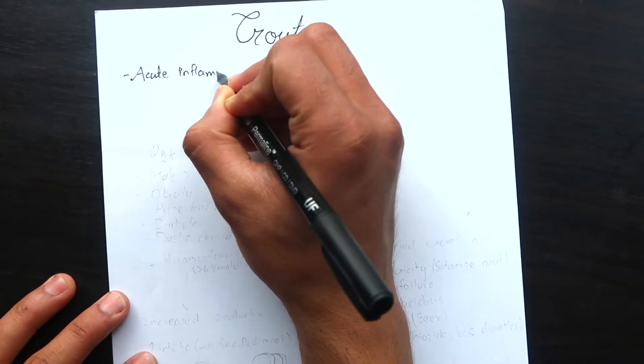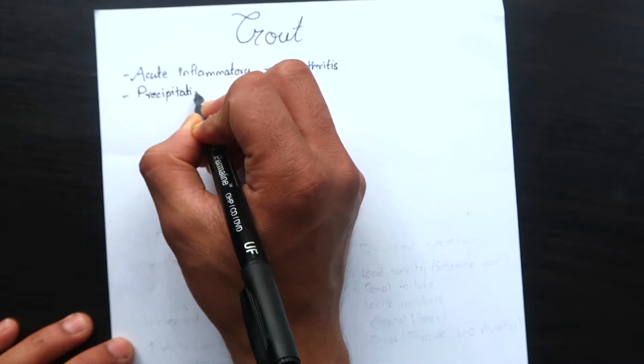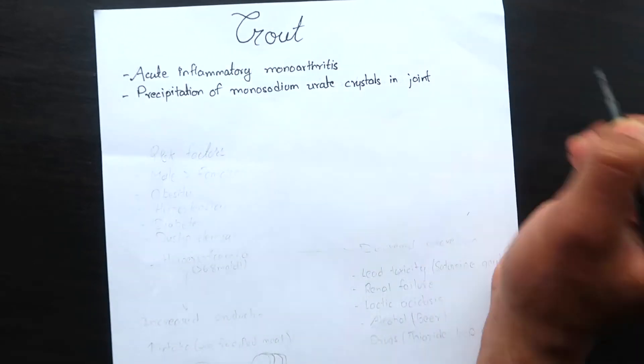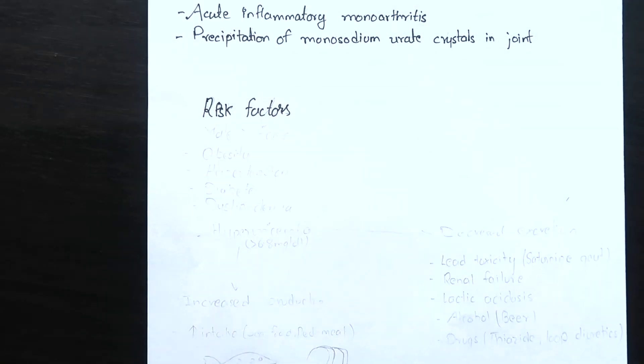Gout is marked by transient attacks of acute arthritis initiated by crystallization of monosodium urate within and around the joints. Gout occurs mainly in males then in females and its other risk factors are obesity,